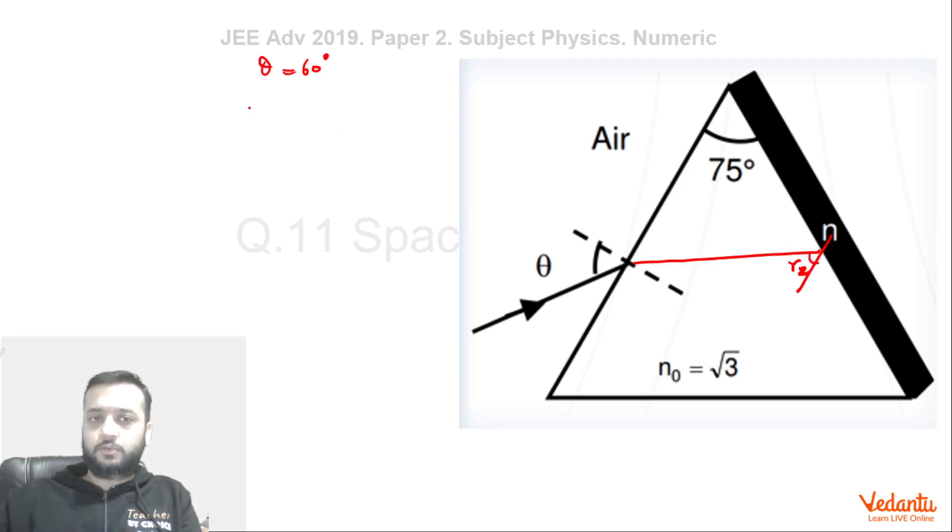So now it's very easy to solve this question. 1 into sine theta will be equals to root 3 into sine of R1. So from here you can see that this is root 3 by 2, sine R1 will become half, and hence R1 will become 30 degrees which will give us R2 as 45 degrees.